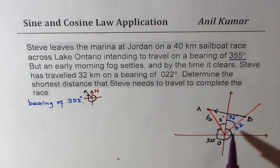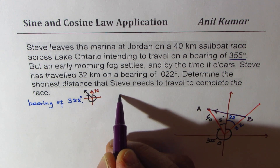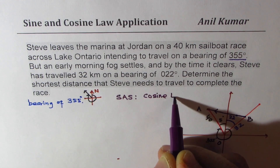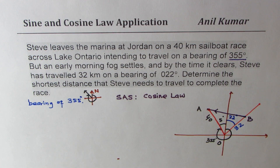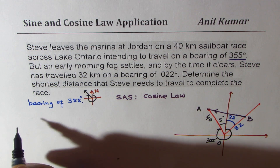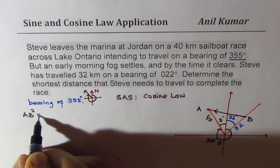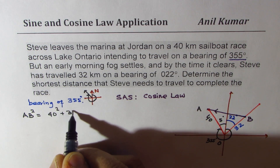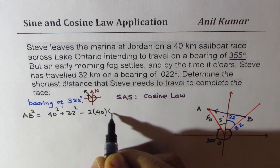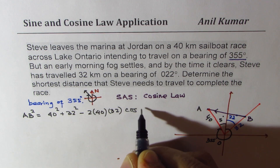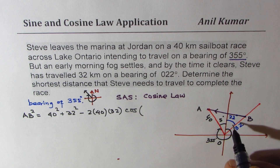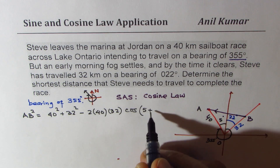As you can see, we already have a triangle where we know two sides and the angle in between. That means we are going to use the cosine law. So AB squared equals the sum of squares of the two sides: 40 squared plus 32 squared, minus 2 times 40 times 32 times cosine of the angle in between, which is 5 plus 22, giving us 27 degrees. The total angle here is 5 plus 22, which is 27.